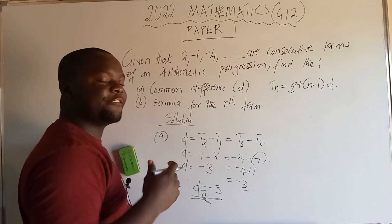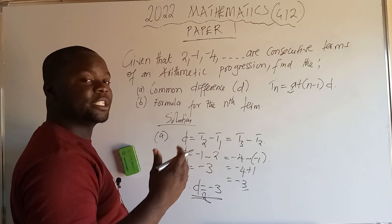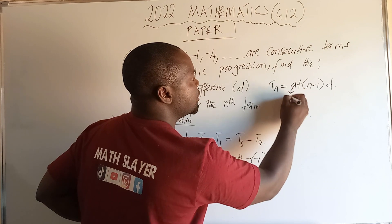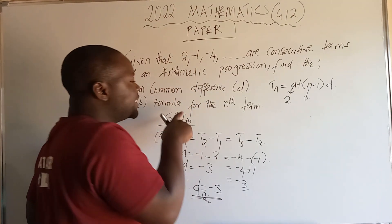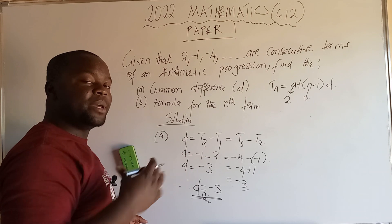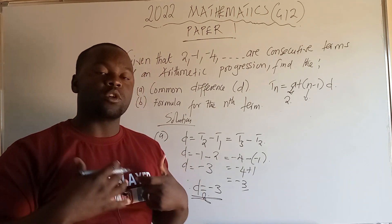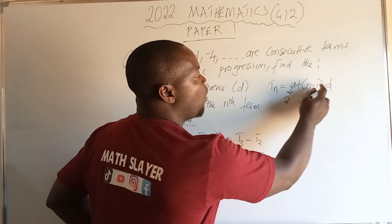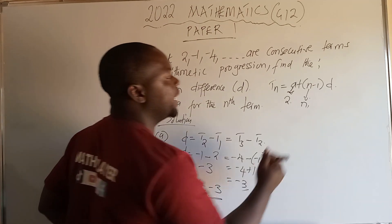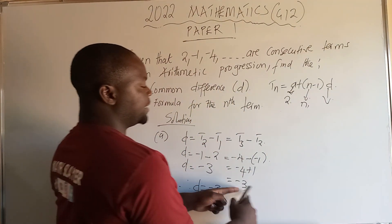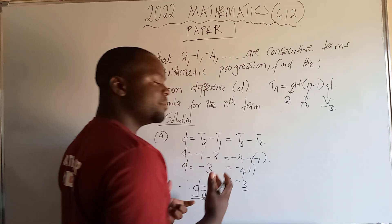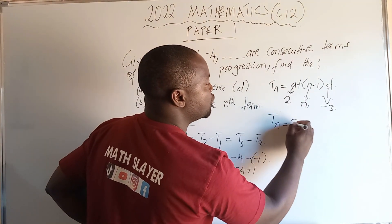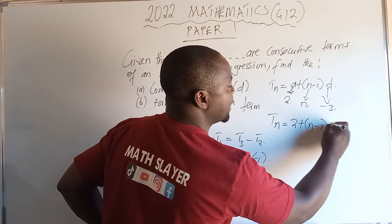Here, A is always the first term of your series or sequence. In this case the first term is 2, so A equals 2. Since we are looking for the nth term, n will remain as n. And D is the common difference, which is negative three. Let's substitute: nth term equals 2 plus (n minus one) times negative three.